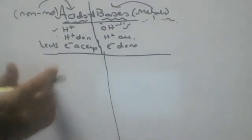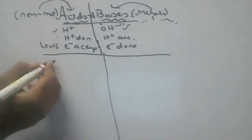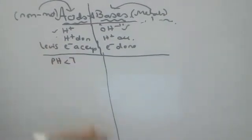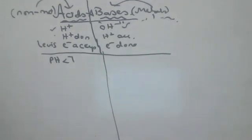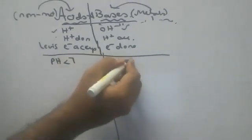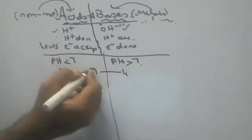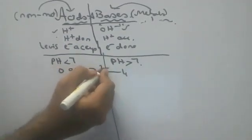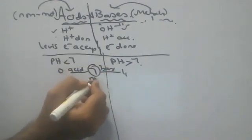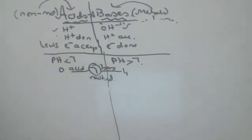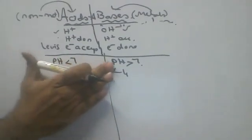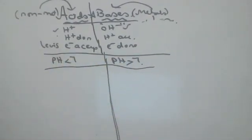The next difference: acids have a pH less than 7, and bases have a pH more than 7. Zero to seven — less than seven are acids; seven to fourteen — more than seven are bases. Exactly seven is neutral. I will discuss pH problems in another class; just remember less than seven is an acid, more than seven is a base.